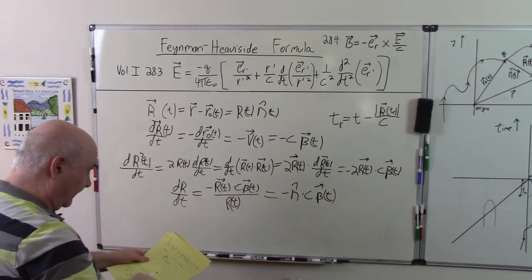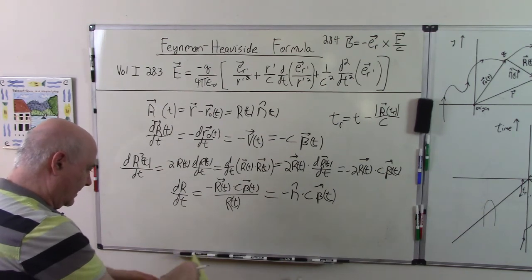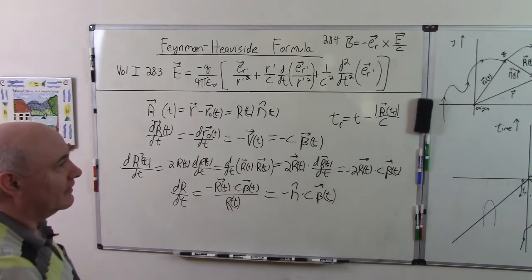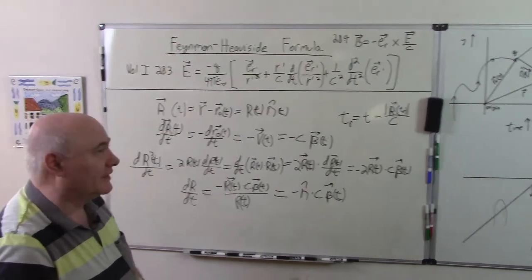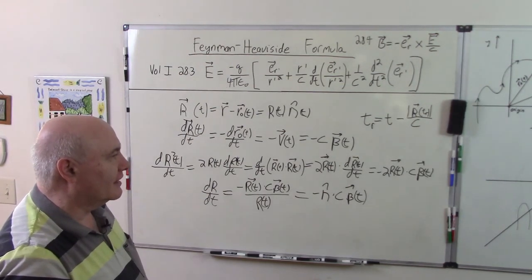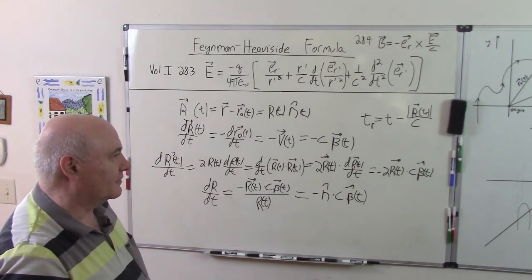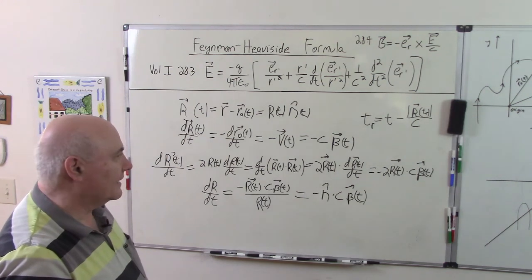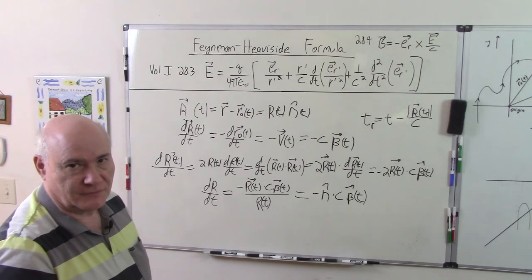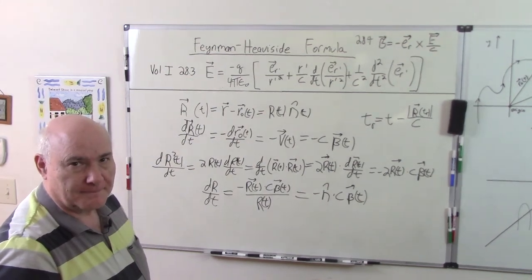Let me see if I have any other quick identities that I might need. I think that will be it for now and then in the next video we'll do a quick derivation of the Lienard-Wiechert potentials and then go on to the fields and the Feynman-Heaviside formula.